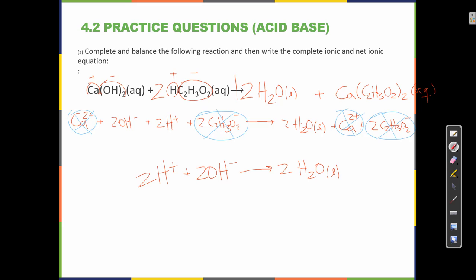But remember, I have to have these numbers be as simple as possible. So a 2 to 2 to 2 ratio is the same as a 1 to 1 to 1 ratio. So H+ plus OH- makes H2O liquid. In an acid-base reaction, this is always the net ionic equation. H+ plus OH- makes H2O.